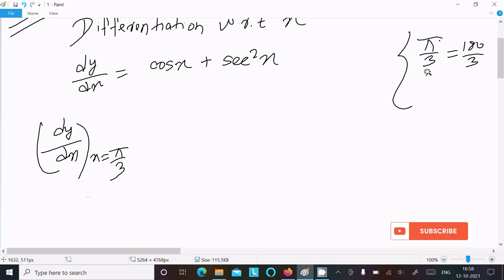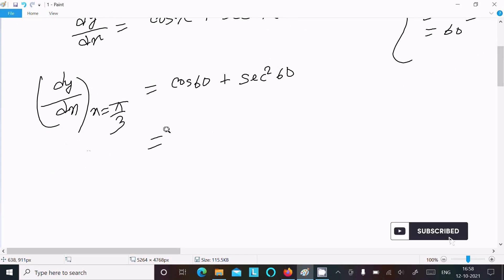After that, cos 60 value. So here, cos 60 value is 1/2, so this is 1/2.